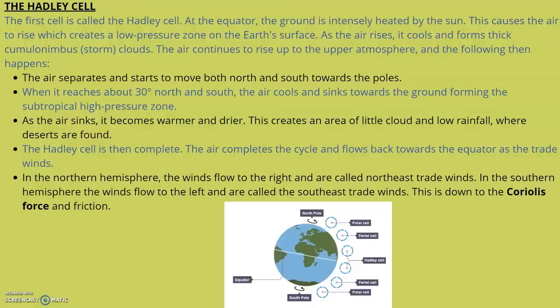As the air rises, it cools and forms thick cumulonimbus clouds. This air continues to rise to the upper atmosphere, and the following then happens: the air separates and starts to move both north and south towards the poles. When it reaches about 30 degrees north and south, the air cools and sinks towards the ground, forming the subtropical high pressure zone.